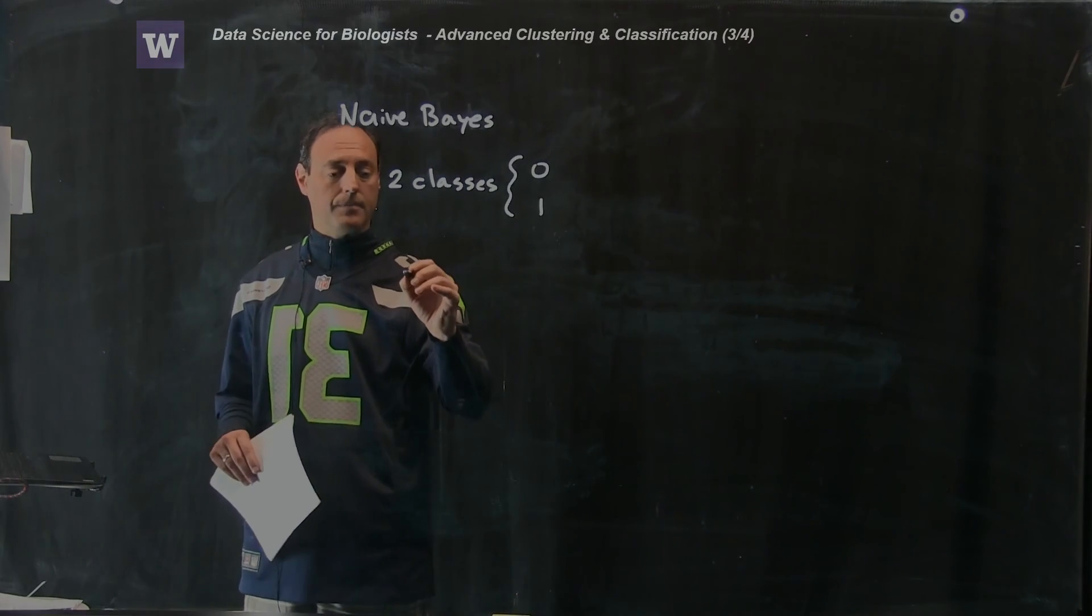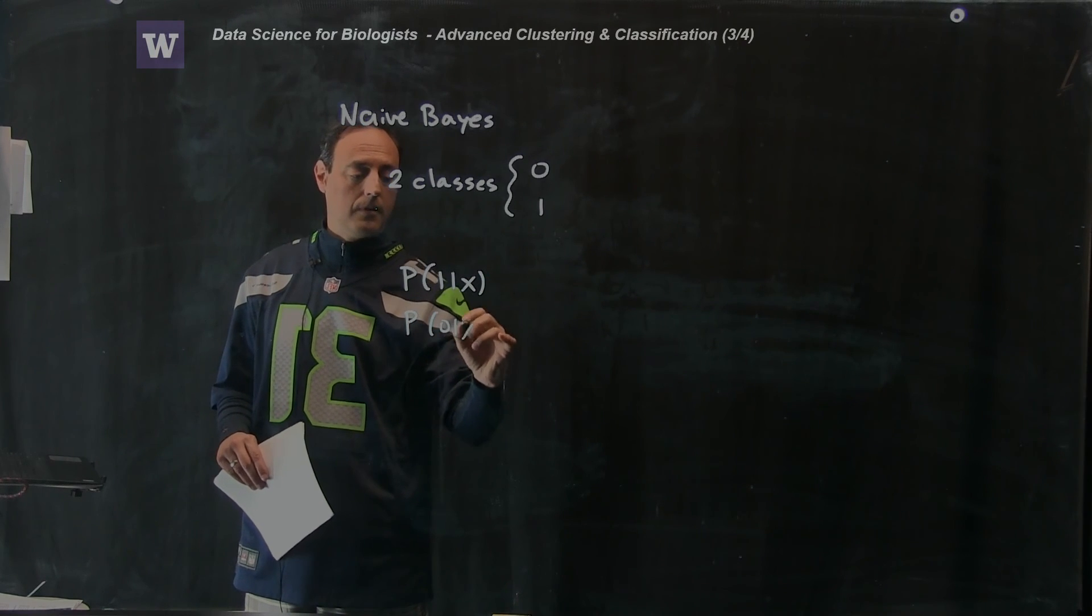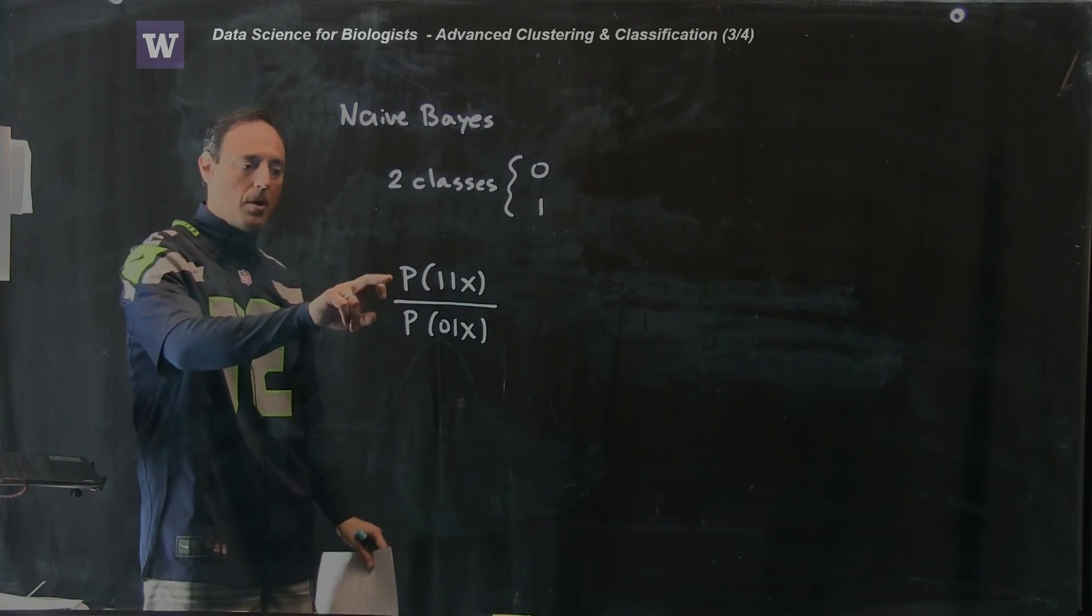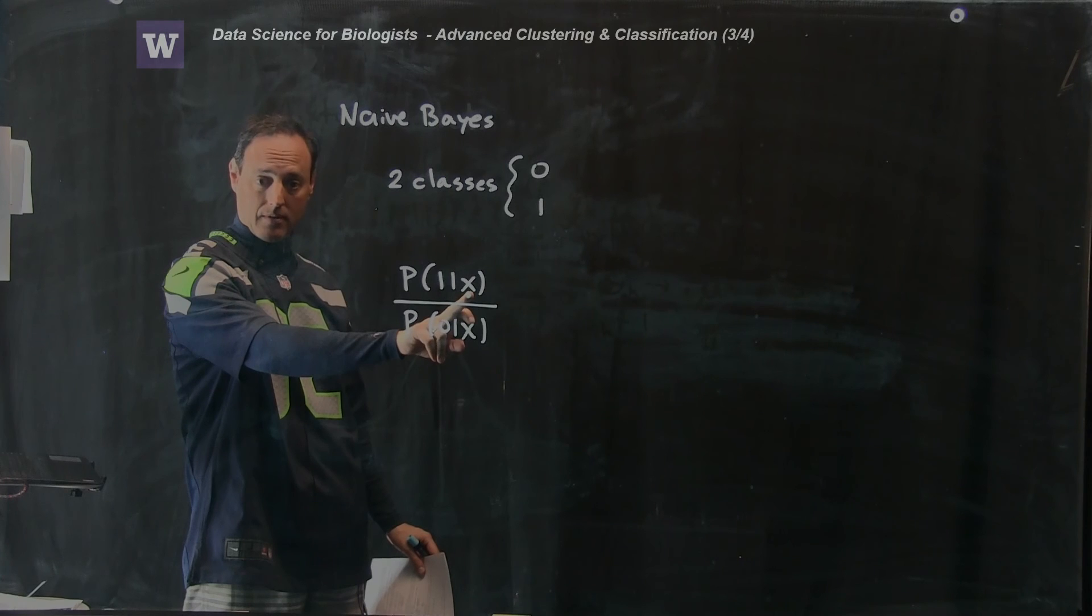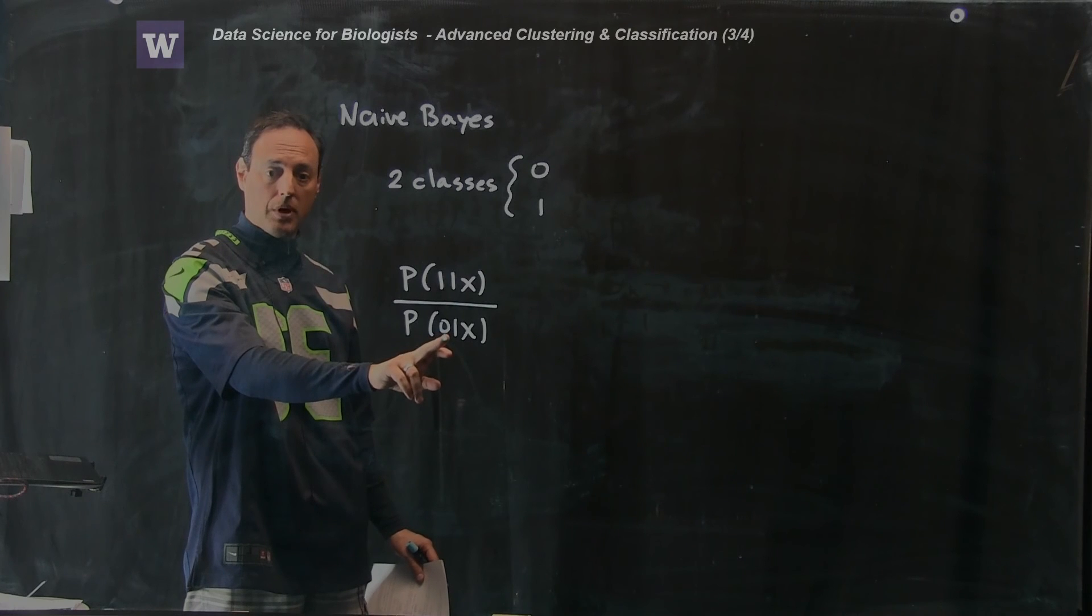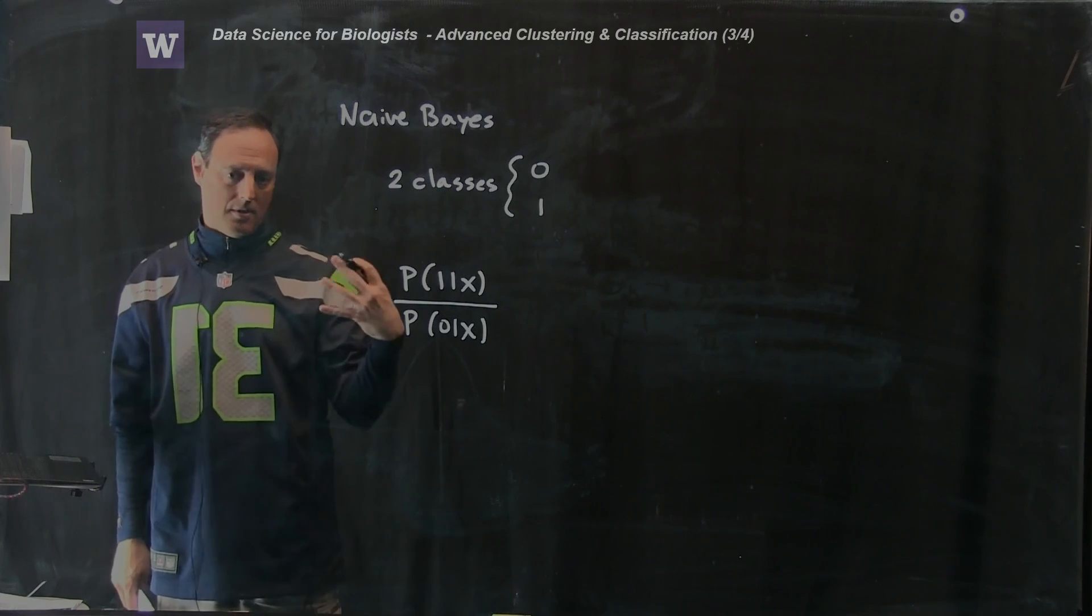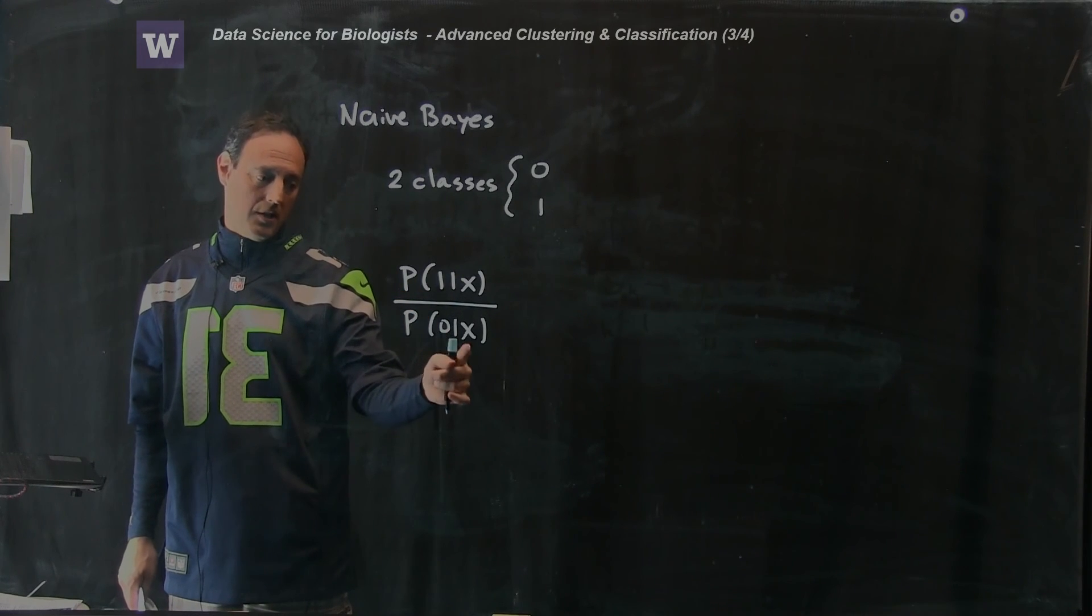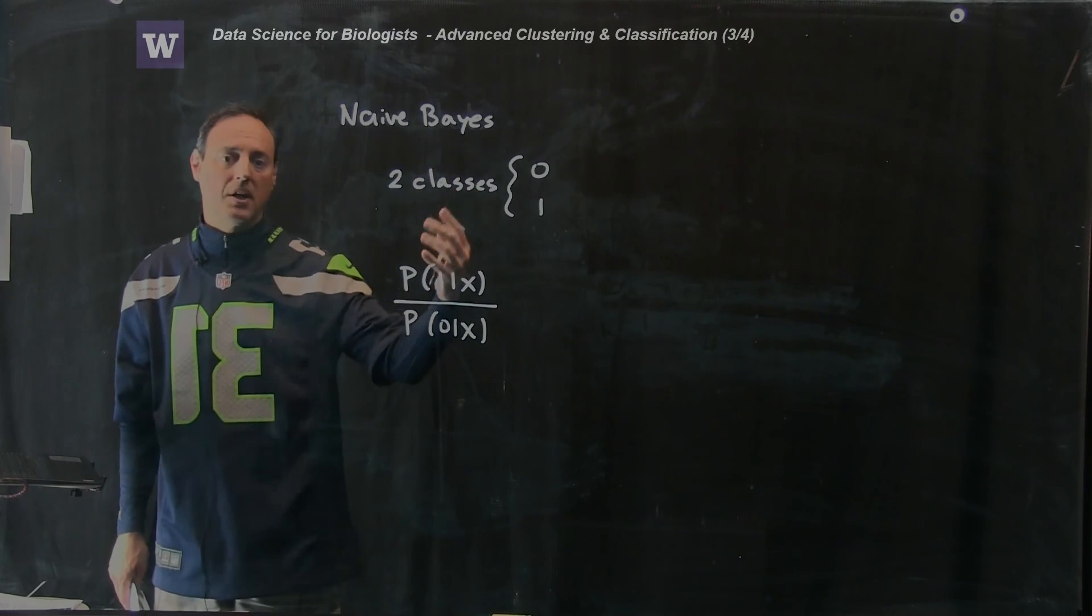So I'm going to construct a score of the following. I'm going to use conditional probabilities. I'm going to construct the following ratio: what is the probability of having class 1 given the data x versus what is the probability of being class 0 given x. So this is interesting. If you're near cluster 1, this here will be near 1, and this here will be very close to 0.